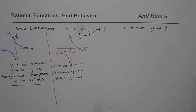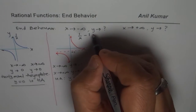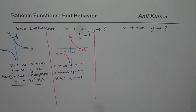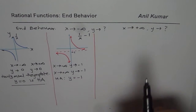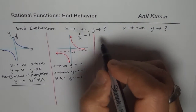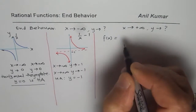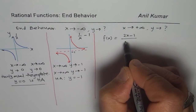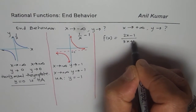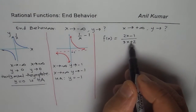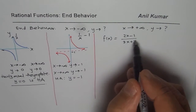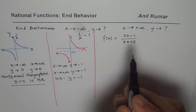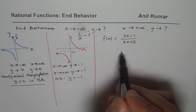Now we will take another example — there could be many different situations. If I take the function f of x equal to 2x minus 1 over 3x plus 2, in this particular case I am not sketching but we will work algebraically to find the end behavior.